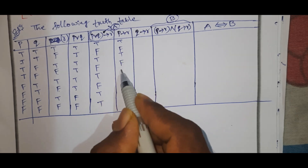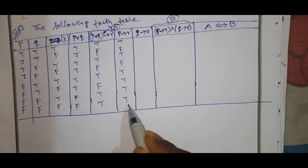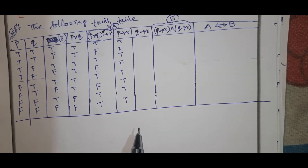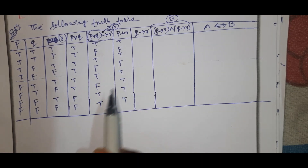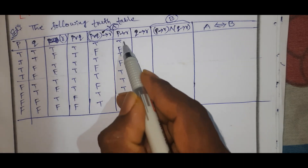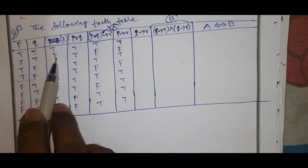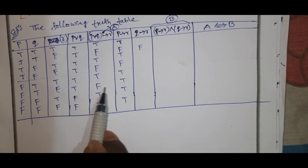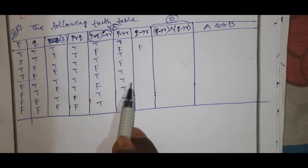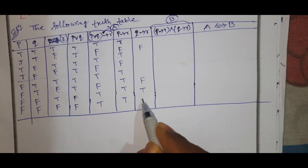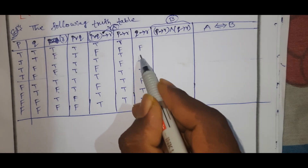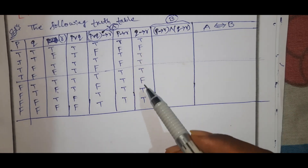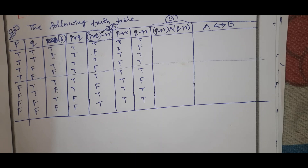The remaining one is true. True, true, true, true — you can see. Here we have a line. First statement is true and second statement is false. The remaining one is true.